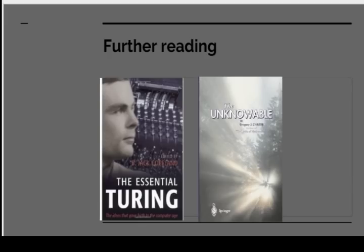If you want to read further about this, about Turing, there's a collection of his works called The Essential Turing with good introductions to each section by Jack Copeland. And if you want to understand some of the more theoretical points about decision procedures and the halting problem, books by Gregory Chaitin are a good start. And I give as an example The Unknowable by Gregory Chaitin. Thank you very much for your attention.